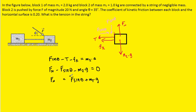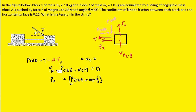So we're going to take this expression for normal force and substitute it back into the first equation. We can do that because fk is equal to a coefficient of kinetic friction multiplied by the normal force. So we've made that substitution into the first equation, and the normal force can be replaced with f sine theta plus m2g. And so this equation is one that we're going to hold on to.